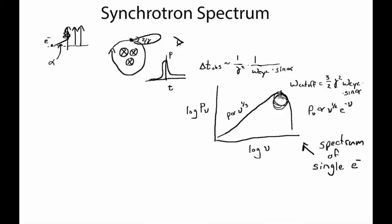So what happens when we have an ensemble of electrons? Well, for one thing, because this cutoff frequency here depends on gamma, which is related to the energy of the electrons, we need to make some assumption about what the distribution of these electron energies are in this group of electrons. So let's assume that the differential number of electrons, dn, in some energy interval, dE,